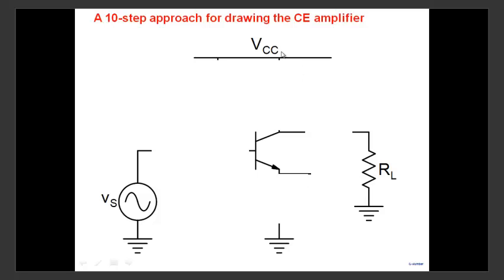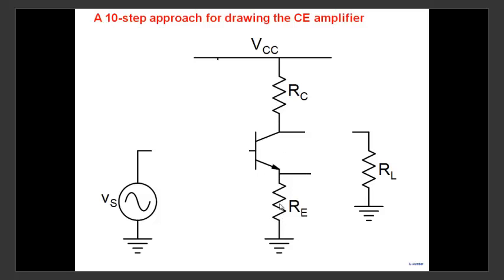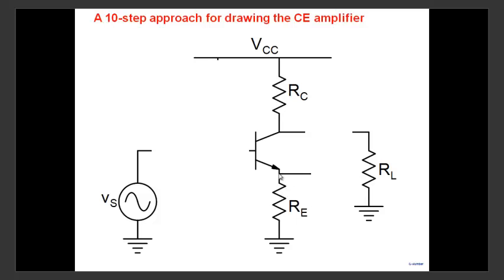We're building a common emitter amplifier where we take output from the collector, so I can't connect the collector directly to VCC. The power flows from supply to load, so we connect RC. If we directly connect to VCC, the collector voltage becomes constant and no signal can appear. Then we bias this transistor through the emitter resistor RE, developing a voltage there. That gives rise to the emitter current, which results in a collector current. To generate the base voltage, we use a voltage divider.